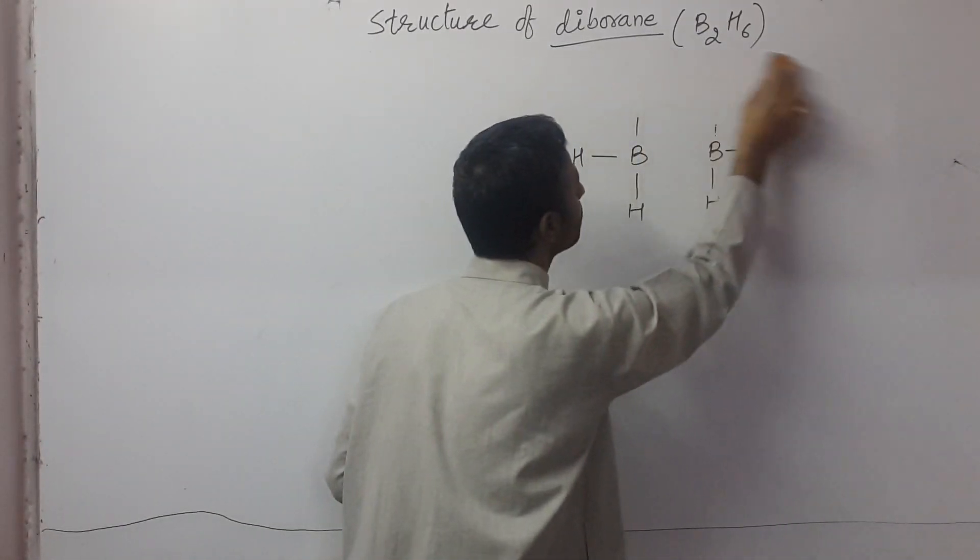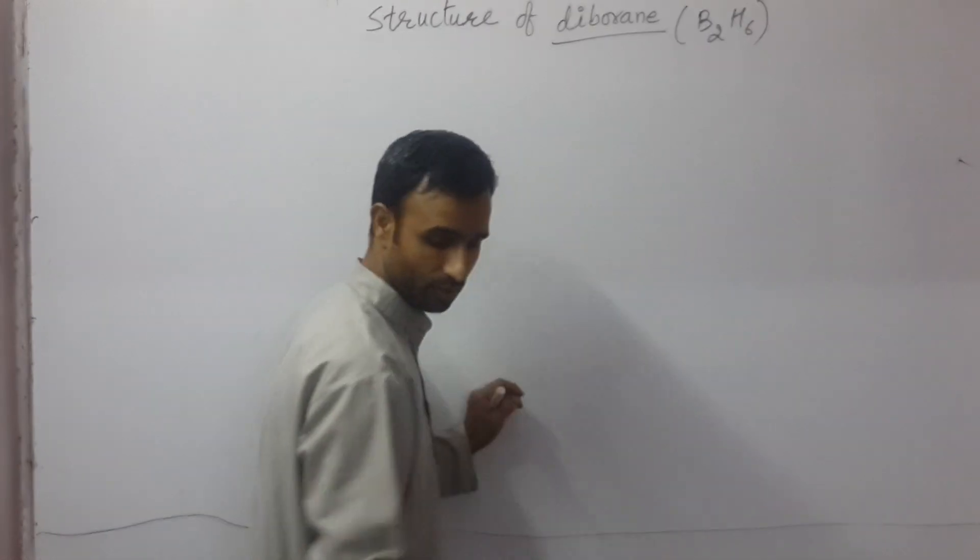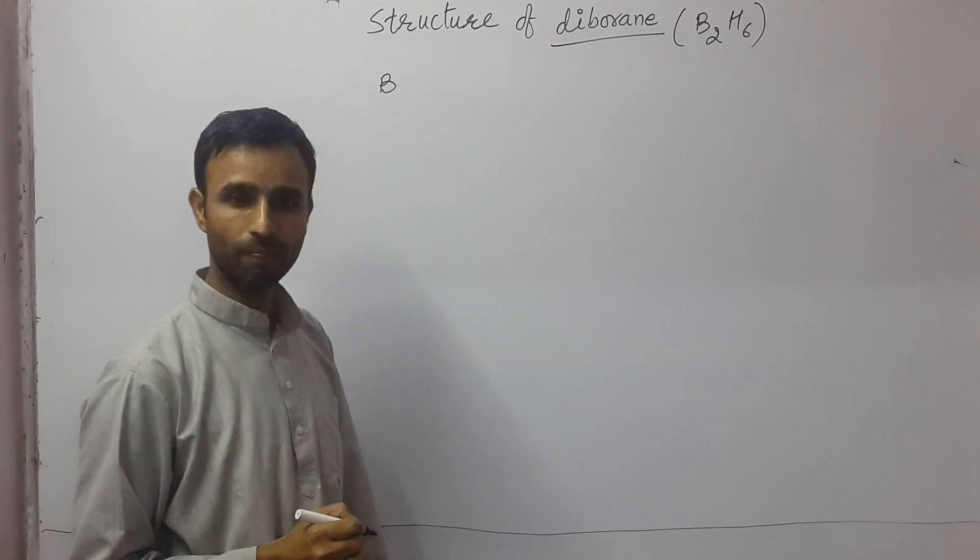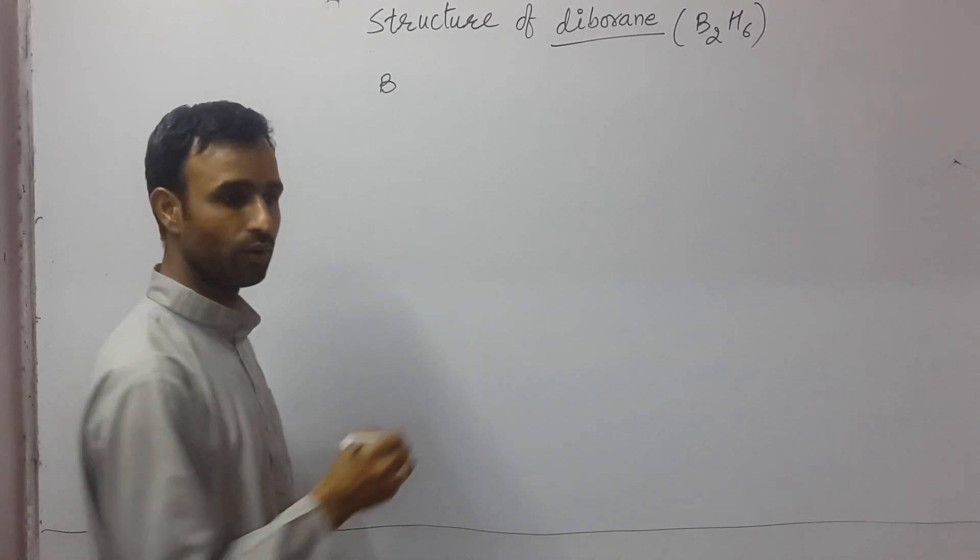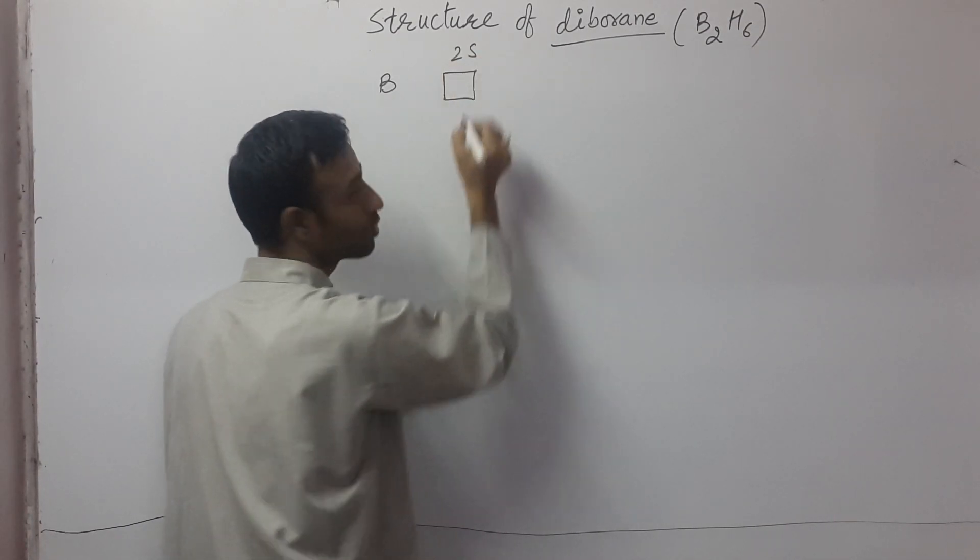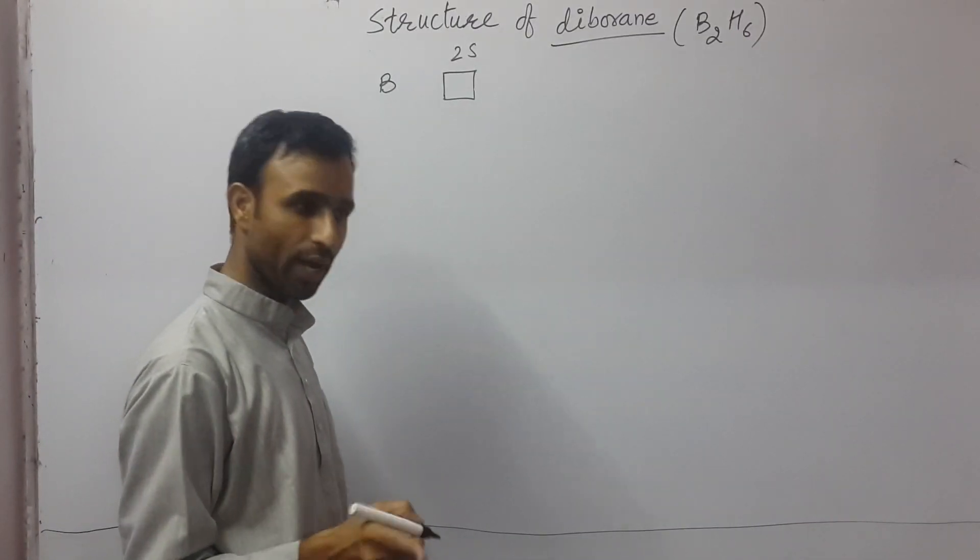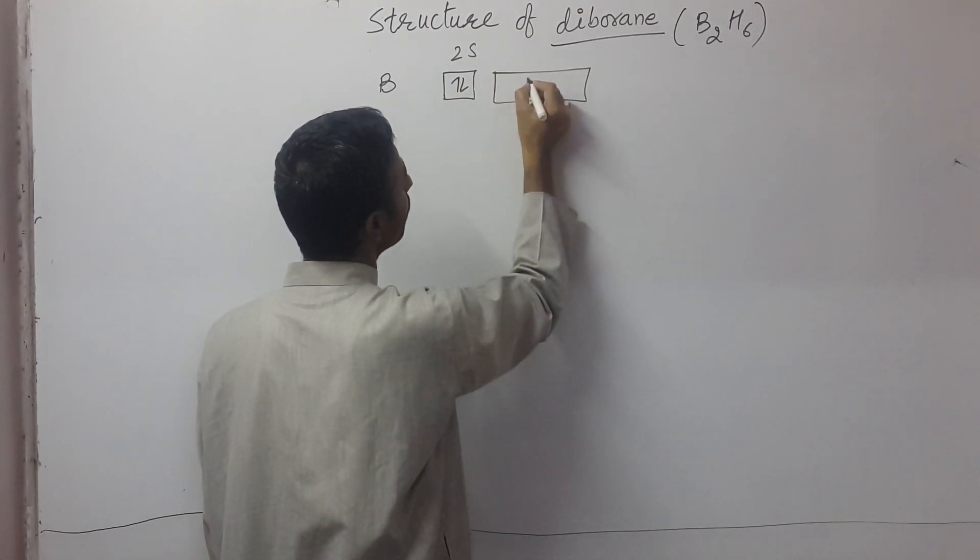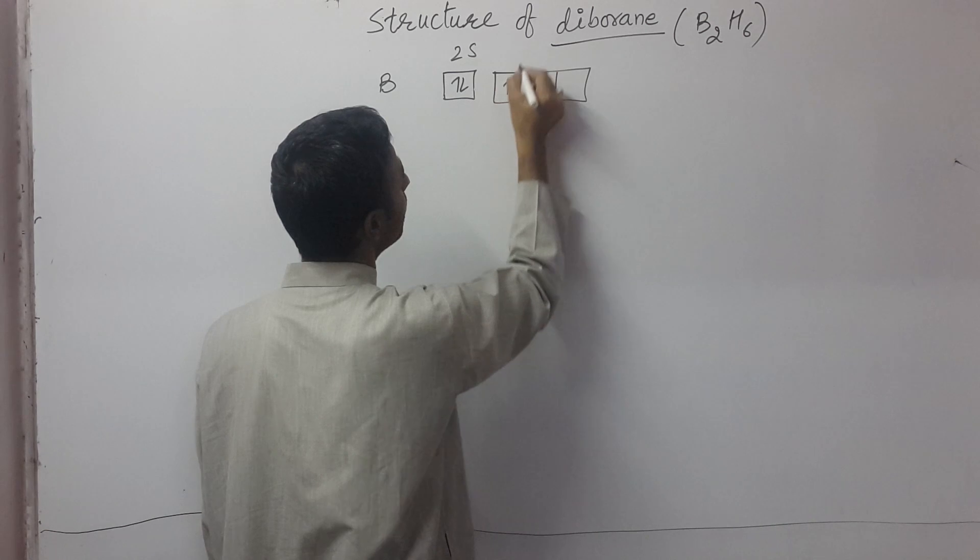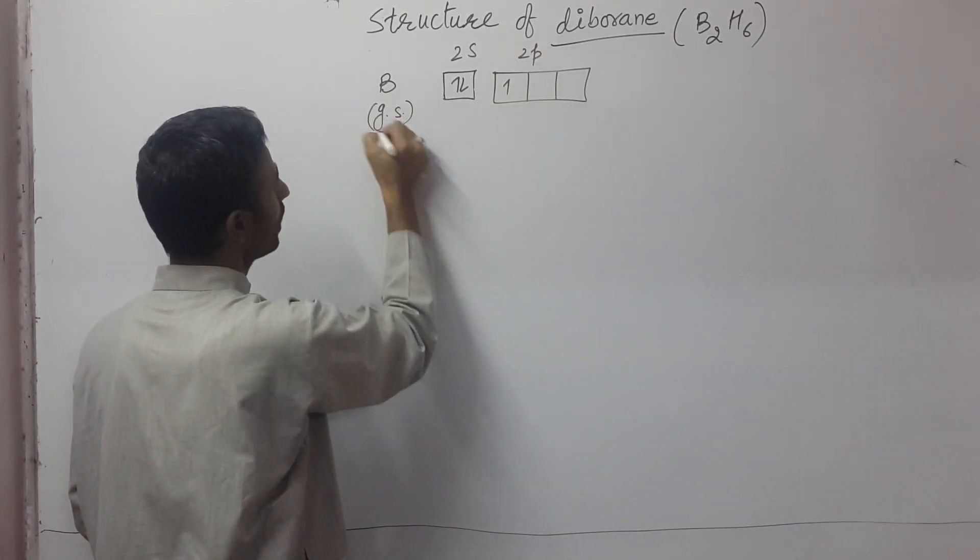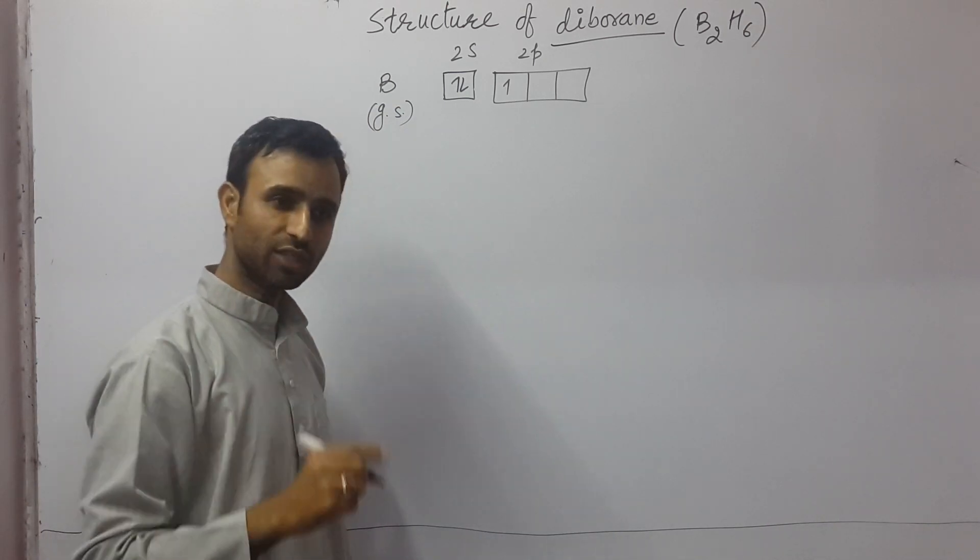Now, what is the electronic configuration of boron? It is 1s2, 2s2, 2p1. So 2s2 and 2p1. So in ground state, boron has one unpaired electron.